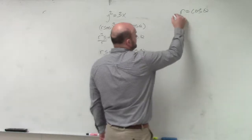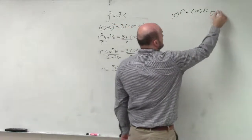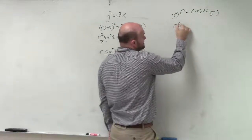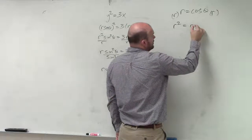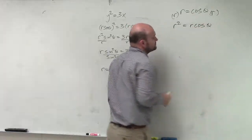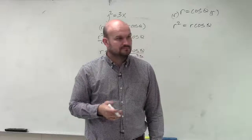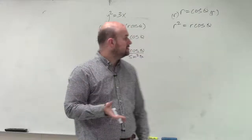So what I could do is multiply by an r on both sides. In that case, I get r squared equals r cosine of theta. Do you guys agree with me on that? No?